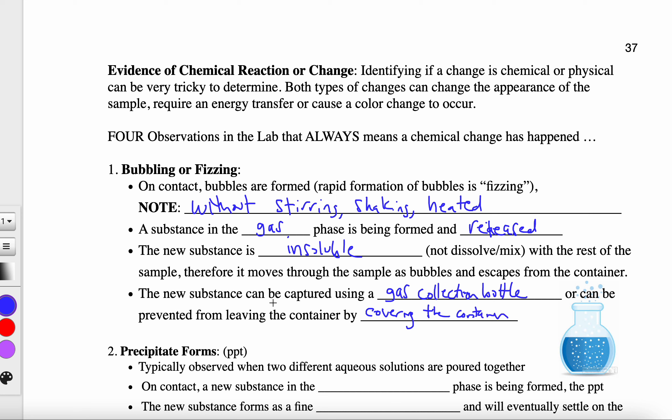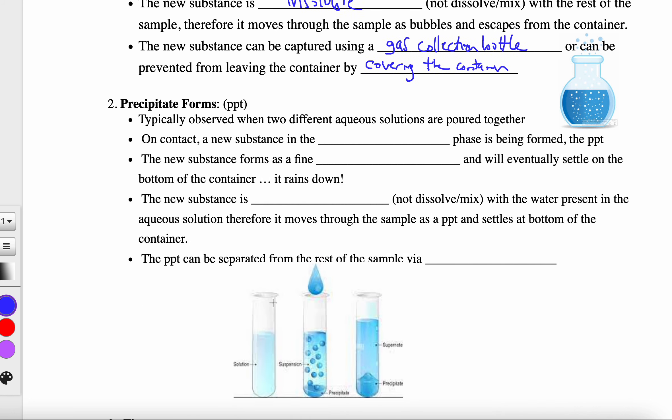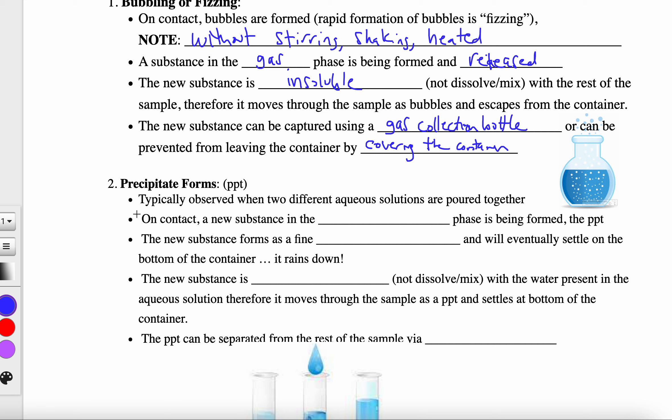A second evidence is when a precipitate forms, abbreviated as PPT. Typically a precipitate forms when we take two different aqueous solutions and pour them together, and as soon as they touch or on contact, a new substance in the solid phase is being formed. That's the precipitate. This is not like a brick or big chunk that suddenly forms. That solid actually forms typically as a fine powder.